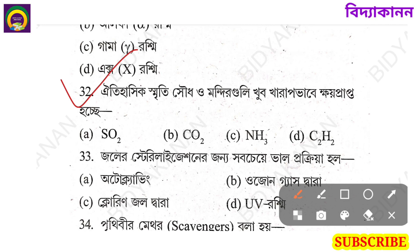SO2 is sulfur dioxide, CO2 is carbon dioxide, ammonia and ethylene. Option number A: sulfur dioxide. This is sulfur dioxide. This is sulfur acid. This relates to a stone cancer process.